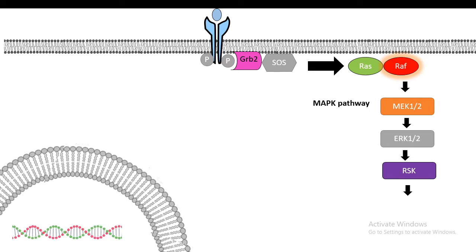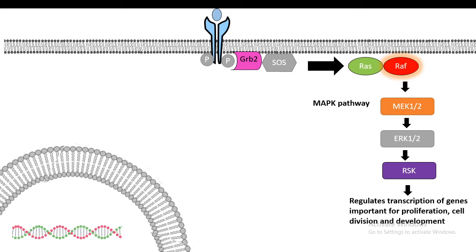In stepwise fashion, the kinase cascade goes on and ultimately the MAP kinase is phosphorylated, which leads to changes in gene expression. These MAP kinase pathways are more pronounced in growth signaling pathways. The genes that are transcribed are mostly important for growth, survival, and cell division. This was a quick overview of the MAP kinase pathway.